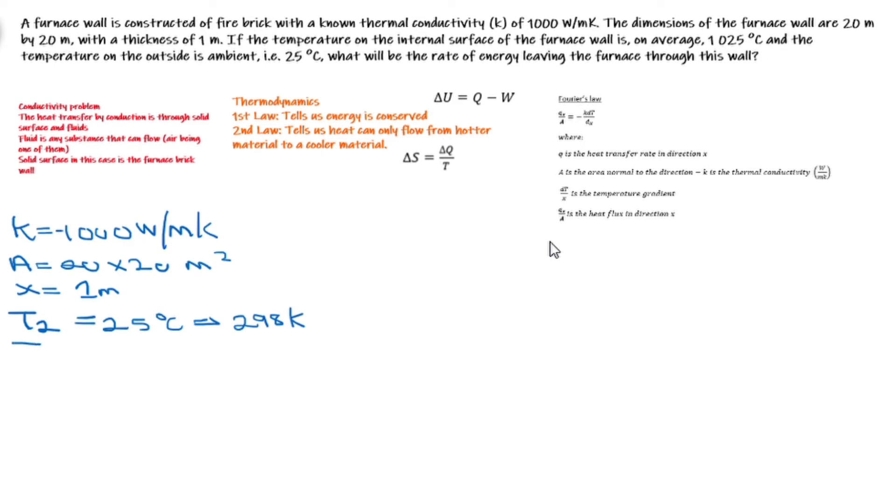Temperature 1 is given to be 1025 degrees. Similarly, this should give you 1298 Kelvin. We are asked to calculate the heat transfer rate.